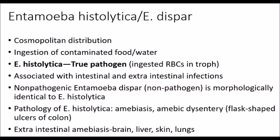The first one I'd like to talk about is Entamoeba histolytica slash dispar. These are two separate species of parasite that are very difficult to differentiate. All of the amoeba we're going to be talking about today have a cosmopolitan distribution and are contracted via ingestion of contaminated food and water. But only one is a true pathogen, and that's Entamoeba histolytica. You can identify it microscopically by seeing ingested red blood cells within a trophozoite.